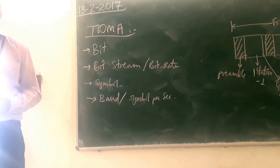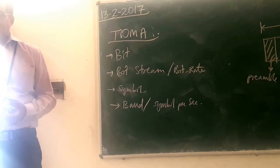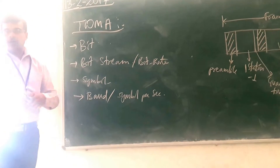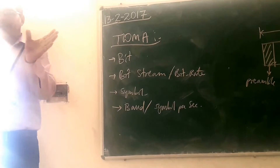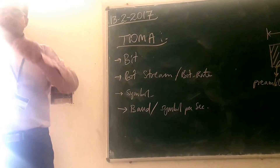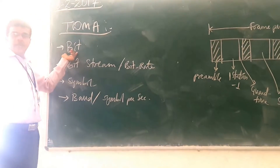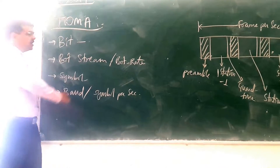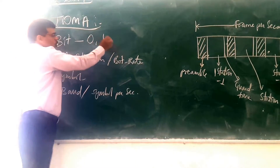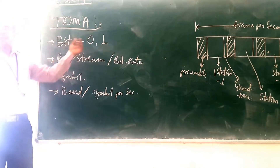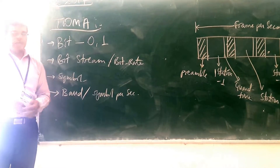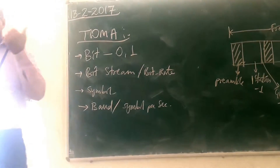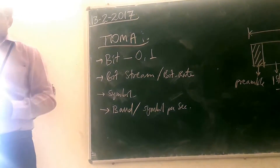BIT — what does BIT stand for? It stands for binary digit. From 'binary' we take the B, and from 'digit' we take the T. In binary, you are having 0 and 1 as binary digits. So that is called your BIT. The BIT may be 0 or it may be 1.